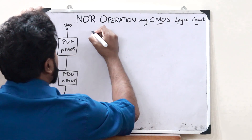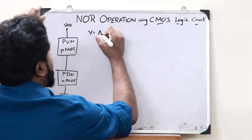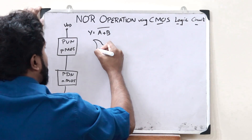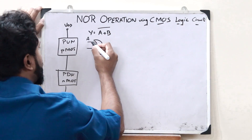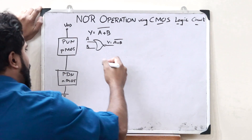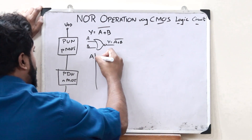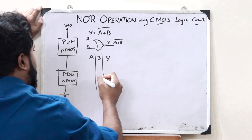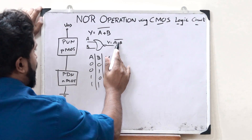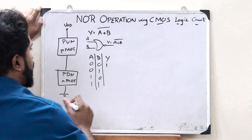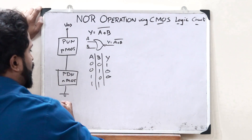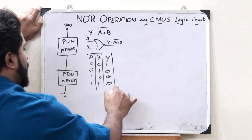A NOR operation is defined as Y = (A OR B)', the whole complement, represented by the NOR logic gate. Taking the truth table with inputs A and B and output Y: when A=0, B=0, the result is 0 OR 0 = 0, complement is 1. When A=0, B=1, that is 0+1=1, complement is 0. When A=1, B=0, that is 1+0=1, complement is 0. When A=1, B=1, that is 1+1=1, complement is 0. This is the truth table we are expecting.